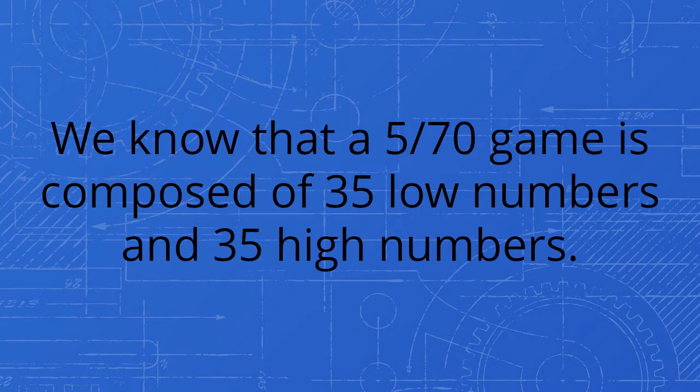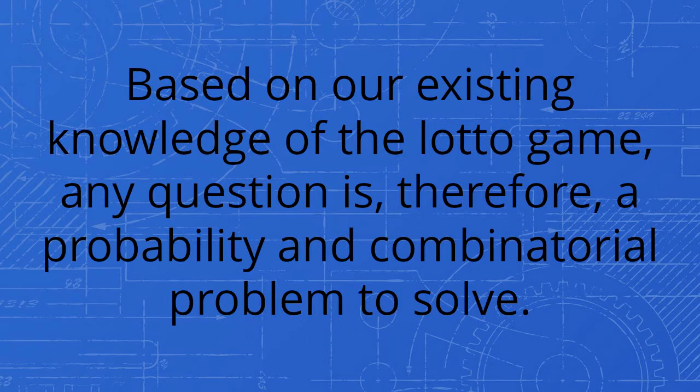We know that a 5/70 game is composed of 35 low numbers and 35 high numbers. Based on our existing knowledge of the lotto game, any question is, therefore, a probability and combinatorial problem to solve.